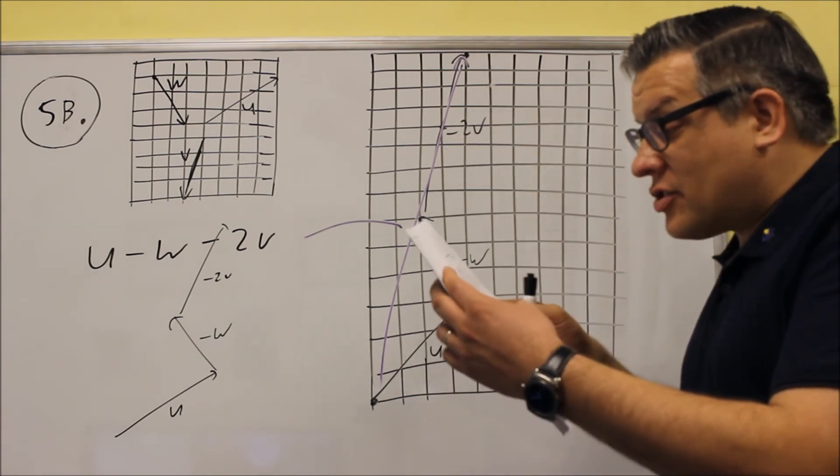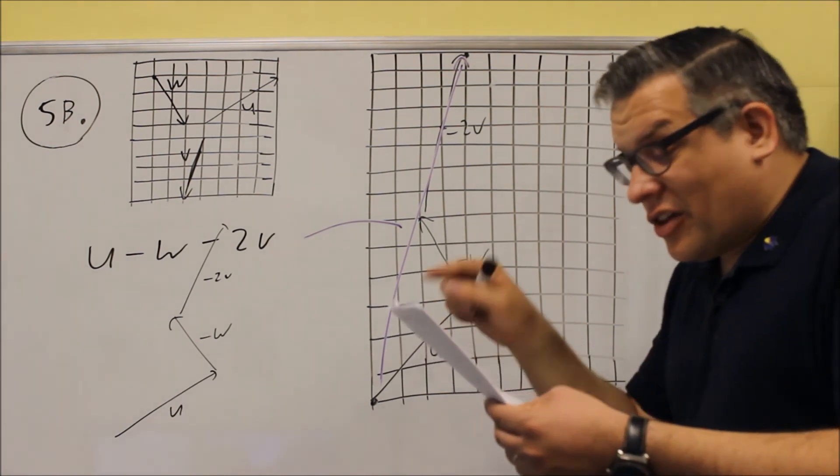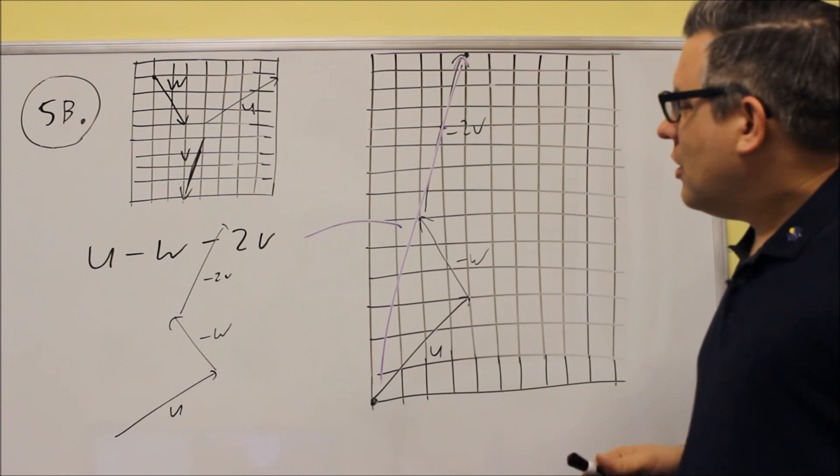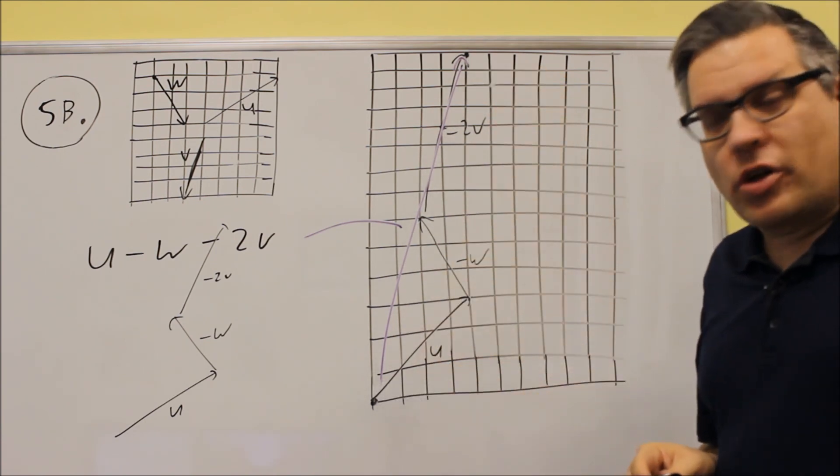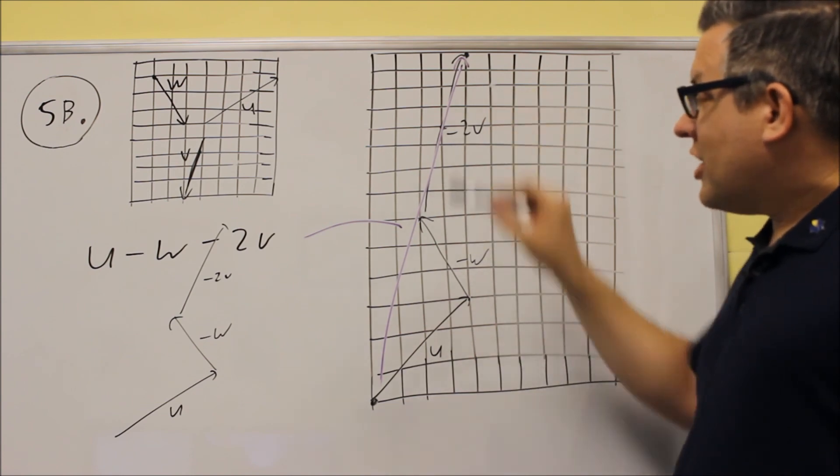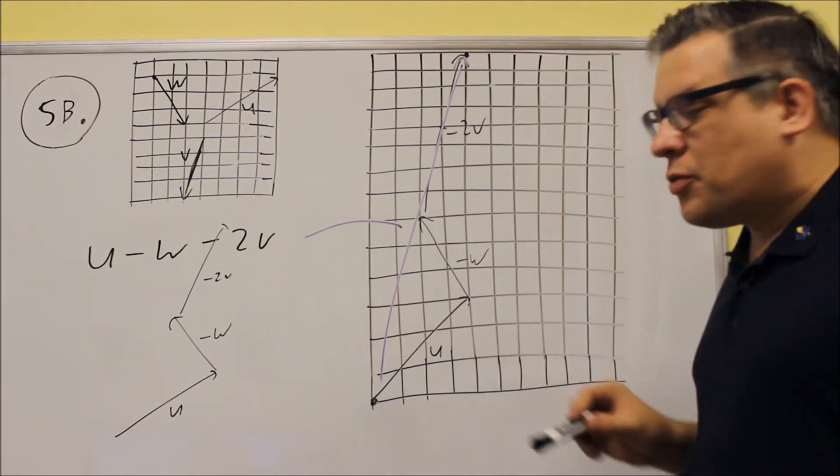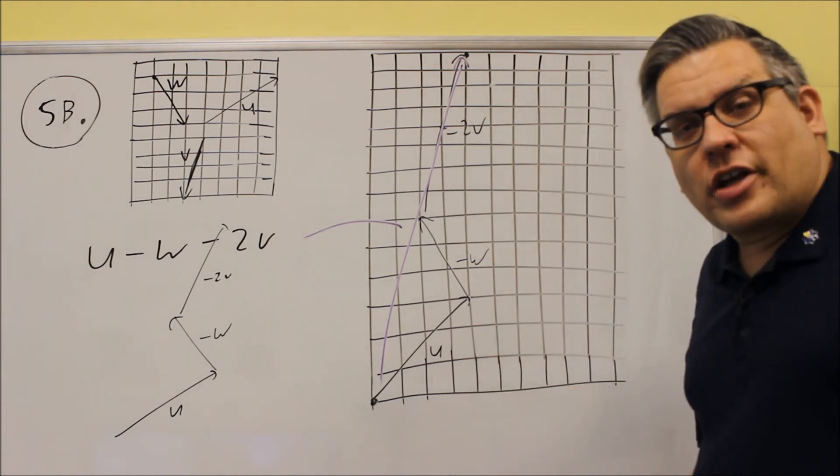If you look at the answer key that I have here, I did it in a different order, but you'll still see that length is exactly the same. It goes four to the right and up fourteen, and so the most important thing is your final answer. That's what I'm looking for. So again, if you cross over something, that's perfectly fine, but this is what your final answer should look like.